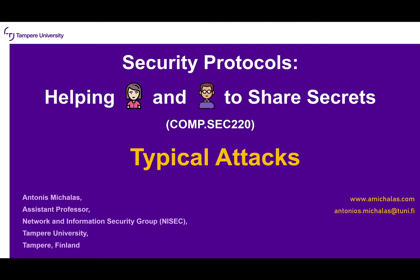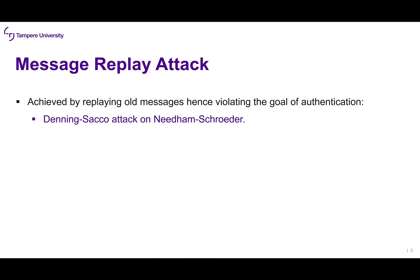Hello again. We move on now to the last part of Lecture 5 where we are going to focus on the behavior of Eve. We are going to describe some more typical attacks that Eve can perform in order to break the privacy of either Alice and Bob, or to fool Alice or Bob.